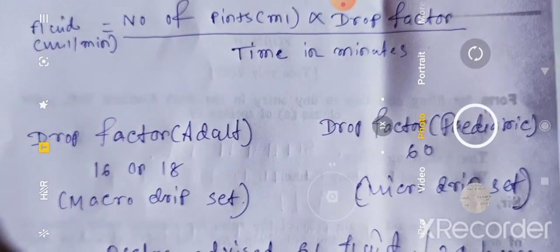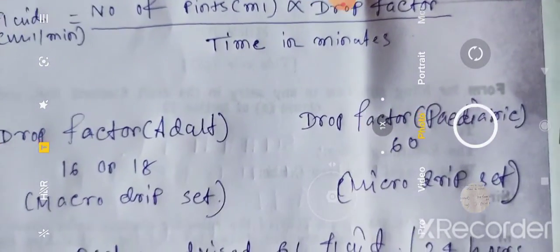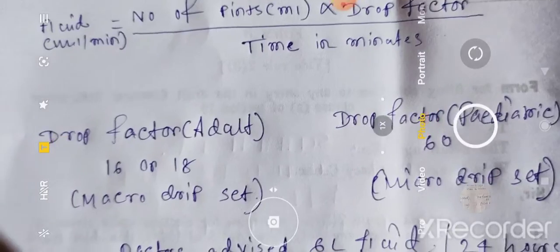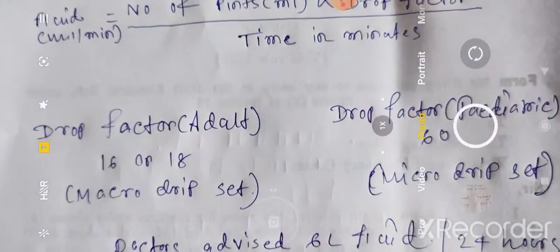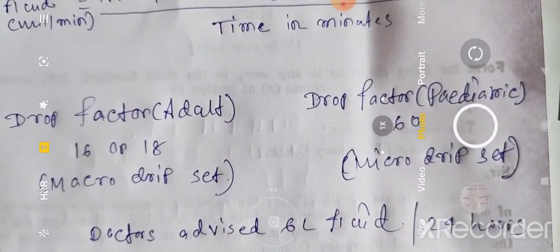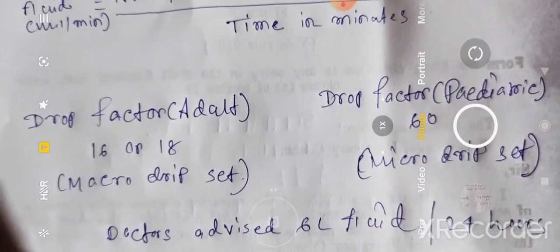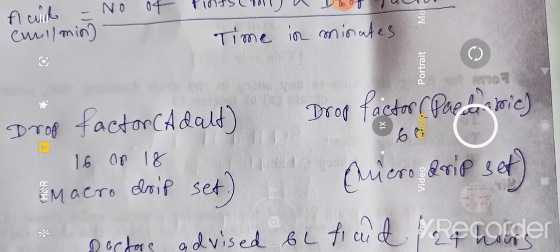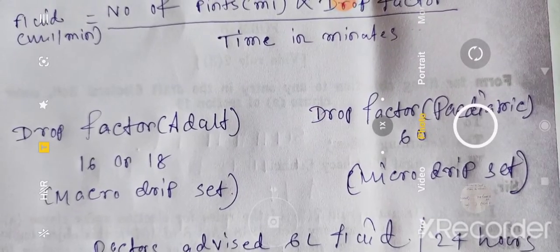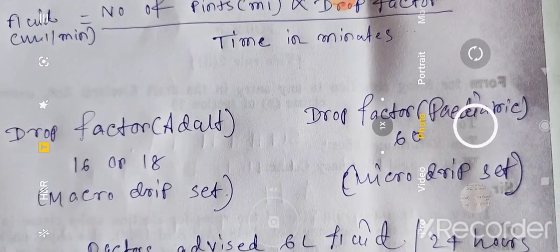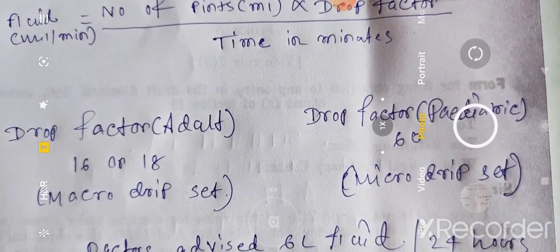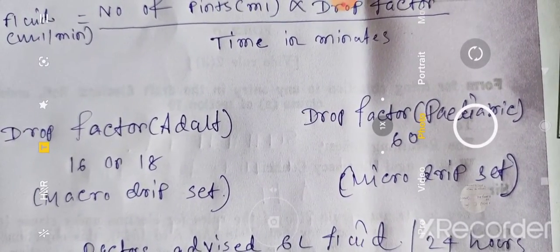Generally for adult we use macro drip sets, and for pediatric we generally use micro drip sets. Drop factor for pediatric is 60 — it is completely different from adult.